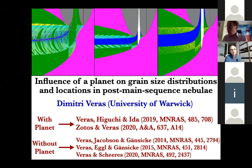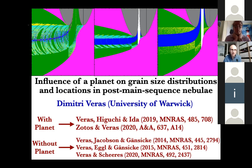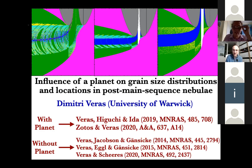On this slide, I list five papers which are the basis of my presentation and contain all of the plots that I'm going to show you. The first two papers, written with Vagulo Zotos, Arika Higuchi, and Shigeru Iida, involve the influence of a planet, whereas the last three papers, written with Seth Jacobson, Siegfried Egold, Dan Shears, and Boris Gansica, do not involve the influence of a planet, but rather only smaller bodies such as boulders and dust.